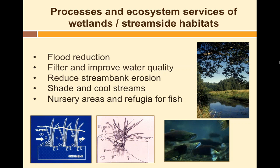Riparian zones, wetlands, and stream sites all provide numerous ecosystem services. Flood reduction is the one we're talking about, but they also filter and improve both surface water quality and groundwater quality. Plants next to the stream reduce stream bank erosion. Having canopies over first and second-order streams — which are very narrow, less than one yard wide in many places — shades and cools those streams, which is really important as air temperatures keep rising. These are also nursery areas and refugia for fish when flooded. All these ecosystem services come back when you restore and protect riparian areas and floodplains.